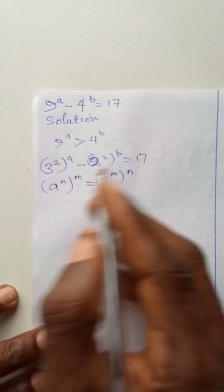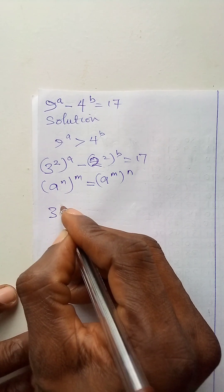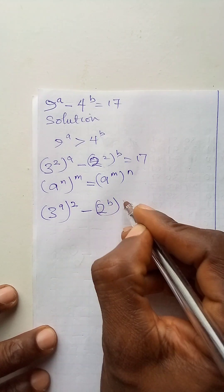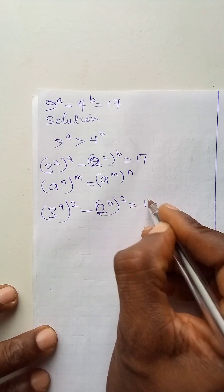So, applying this here, I have 3 to power a to power 2 minus 2 to power b to power 2 will give me 17.